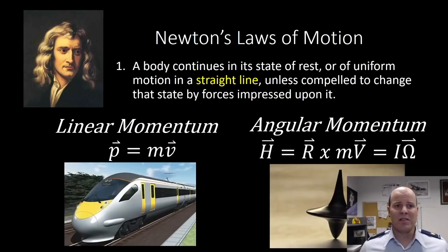The first is that of linear momentum. So here, p, linear momentum, is related to an object's mass times its velocity. Angular momentum, which is represented by this capital H, is related to its inertia, i, and its angular rate or rotation rate, omega.